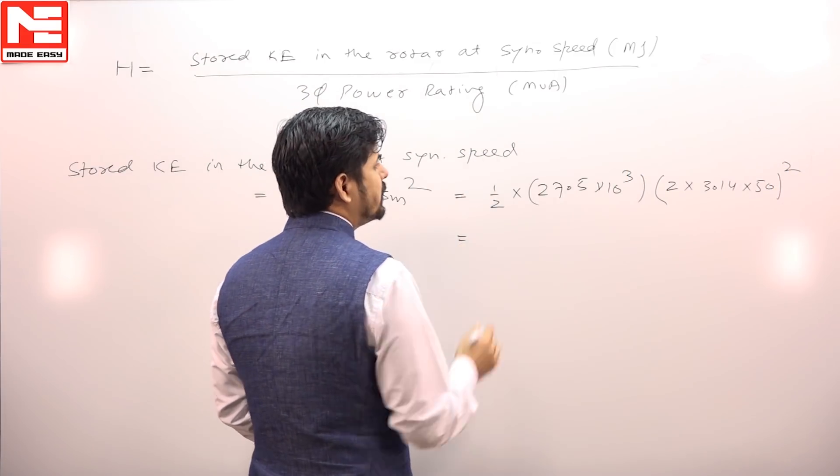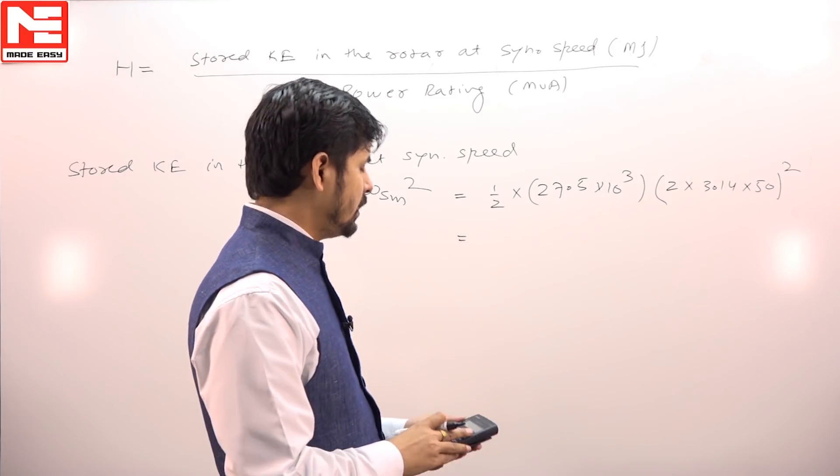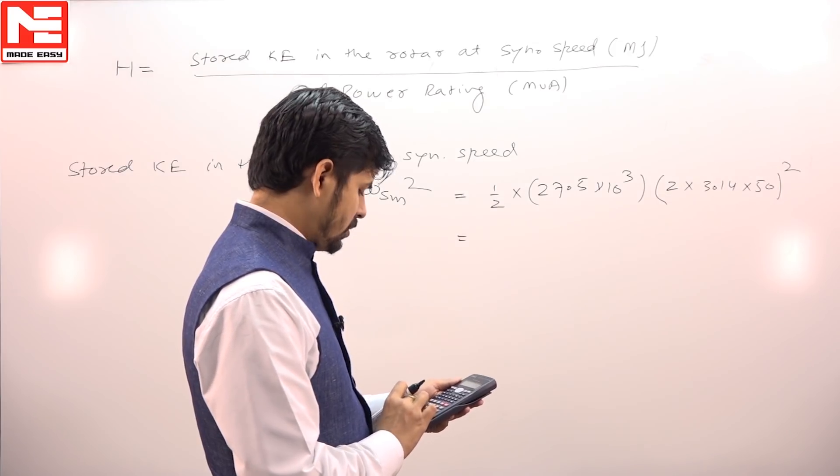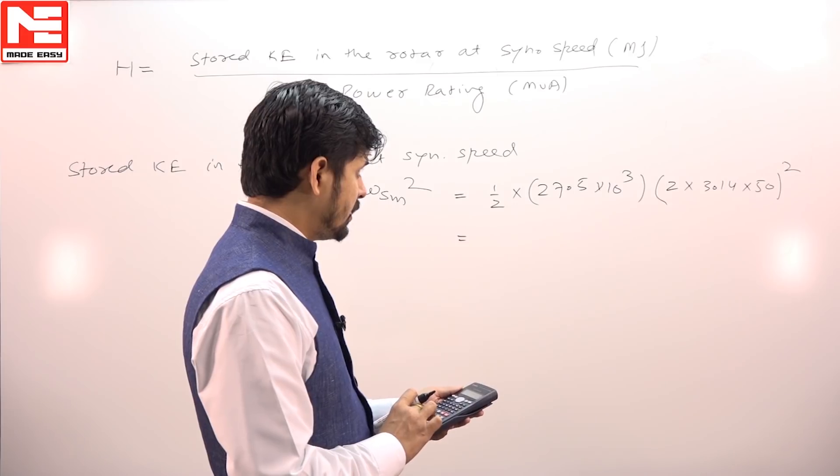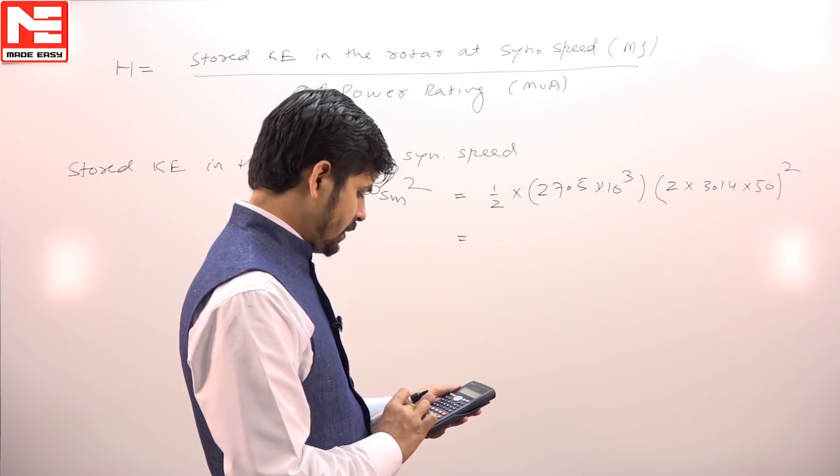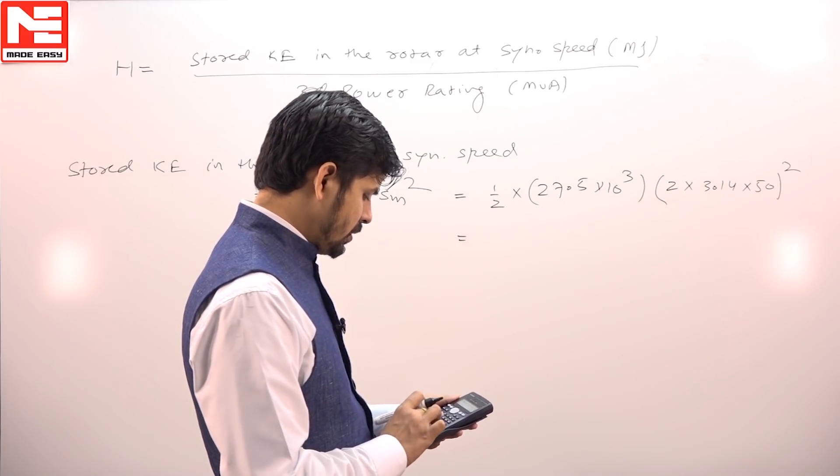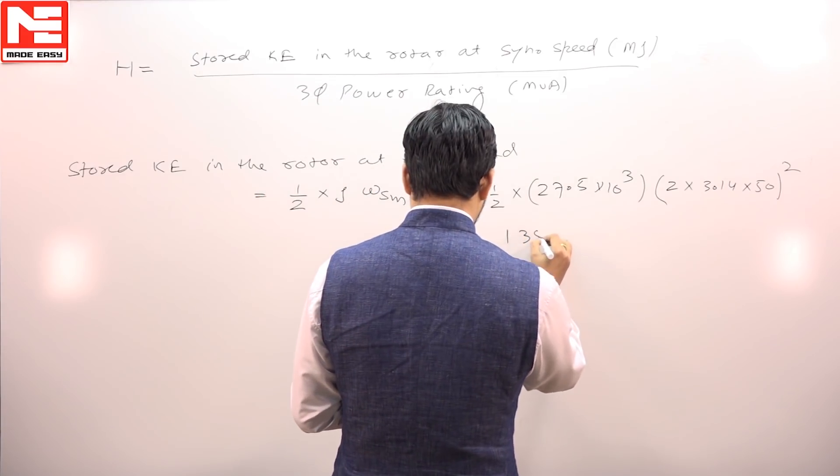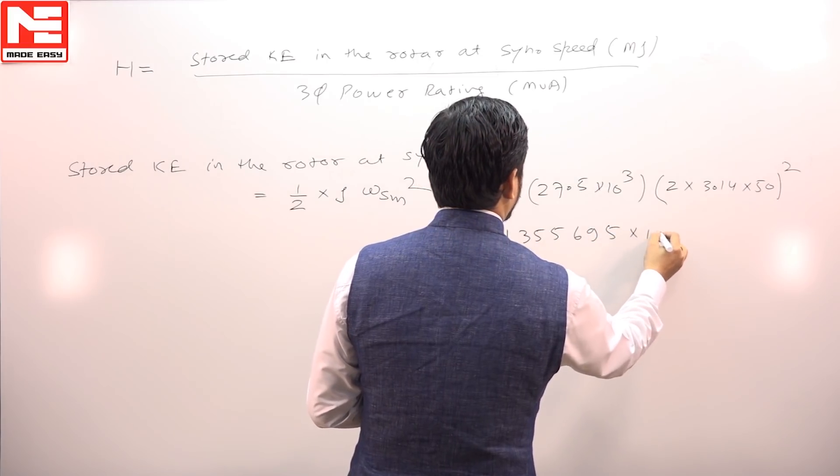We can solve this and the answer is 0.5 times 27.5 times 314 whole square, which equals 1,355,695 times 10 to the power 3 joules.